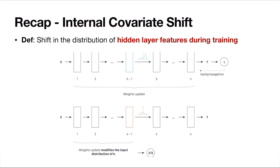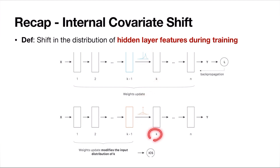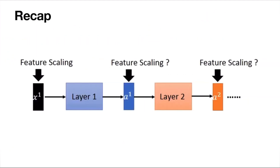Consider layer k-1 and layer k. If the distribution of activations at layer k is some distribution, after weight update via back propagation, the weights change, so the activations change and the distribution changes too. The kth layer had learned the previous distribution, but now it has to adapt to the new one. For every weight update, the distribution might change, making it difficult for layers to learn properly. That is internal covariate shift. To solve this, we add normalization for all intermediate layers — that is exactly what batch normalization is.